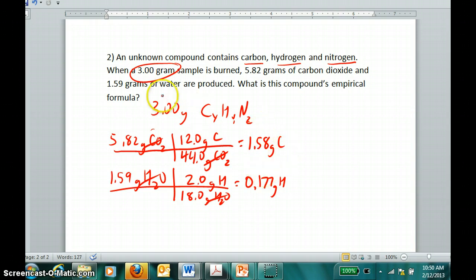These don't add up to 3, and that's because there was nitrogen in the sample. If we take 3 grams of carbon, hydrogen, and nitrogen, subtract 1.58 grams of carbon, subtract 0.177 grams hydrogen, we're left with 1.24 grams of nitrogen.